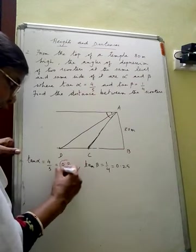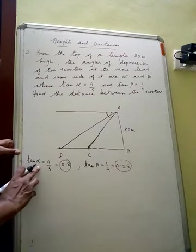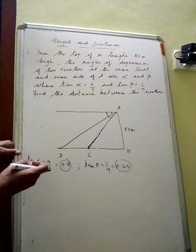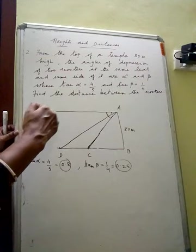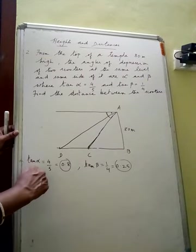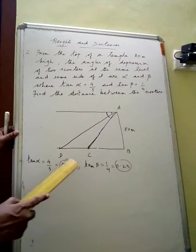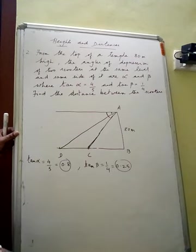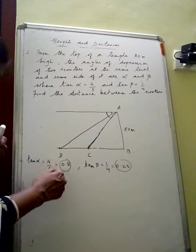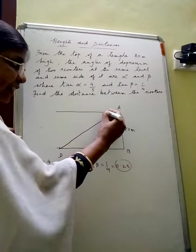Comparing 0.8 with 0.25: tan alpha equals 4/5 = 0.8, which is greater than tan beta equals 1/4 = 0.25. The greater the value of tan of an angle, the greater the angle itself — sin and tan of an angle increase with an increase in angle, while cos decreases. So tan alpha has a larger value and tan beta has a smaller value, meaning alpha is the larger angle and beta is the smaller angle.